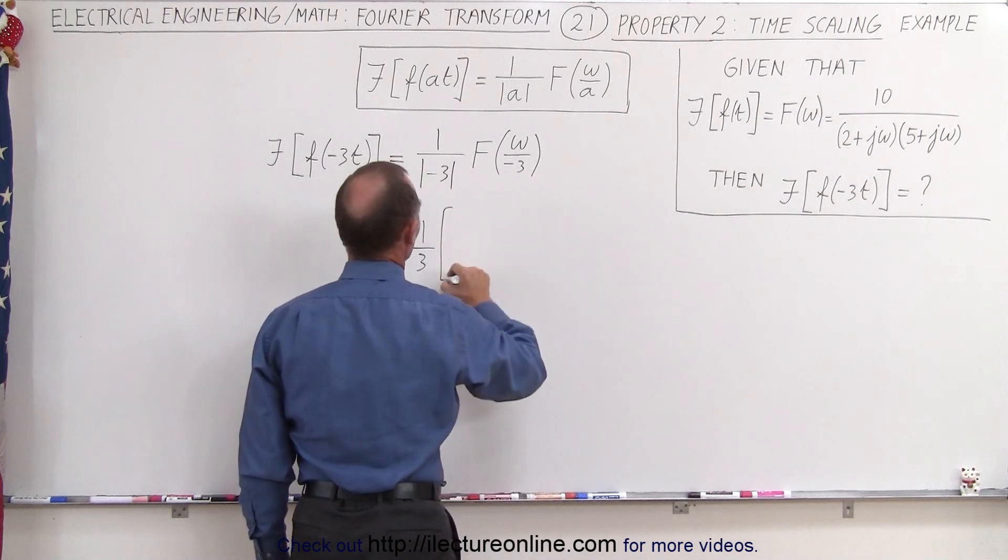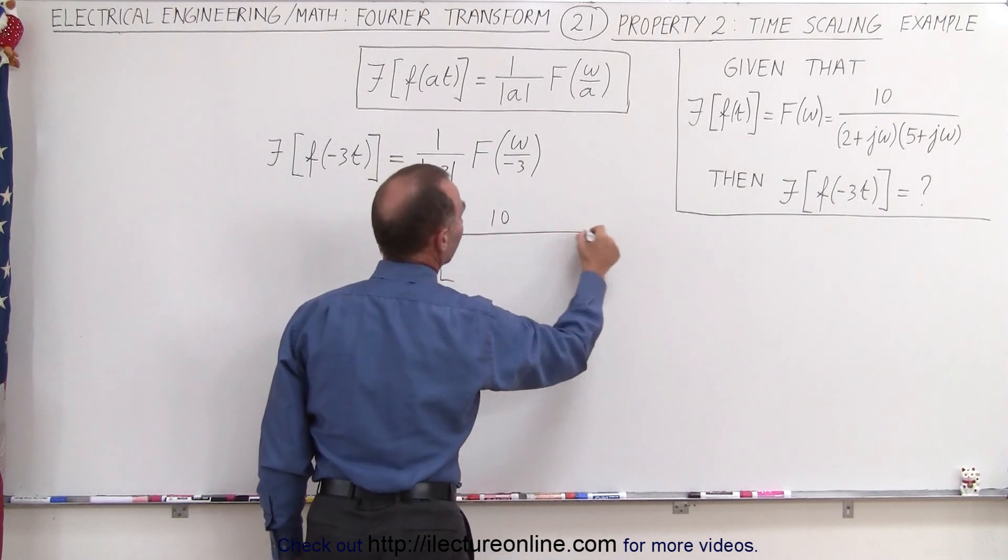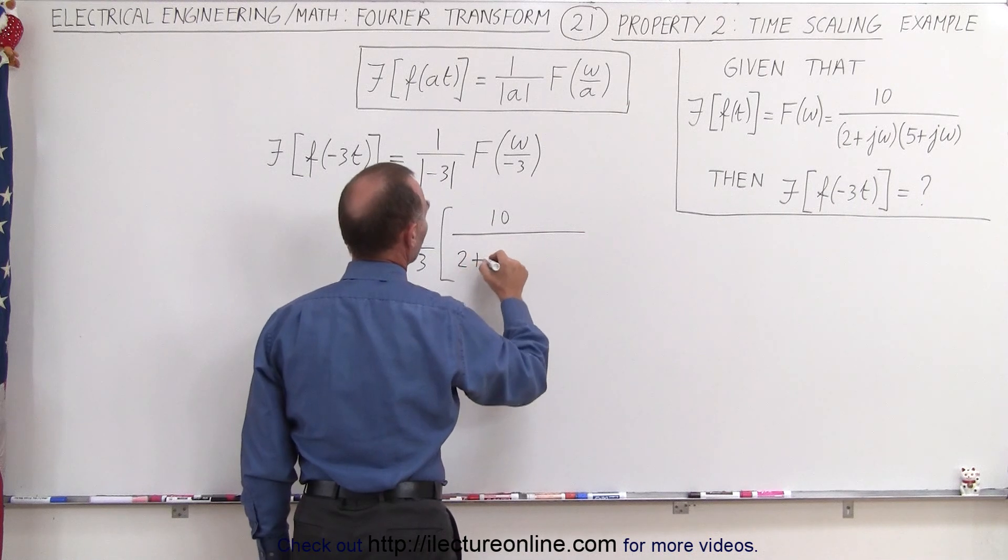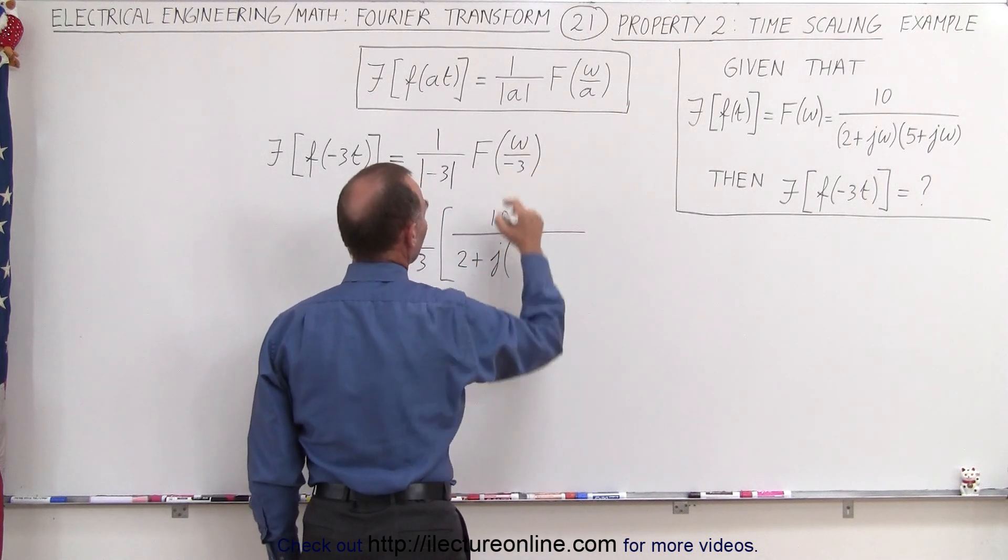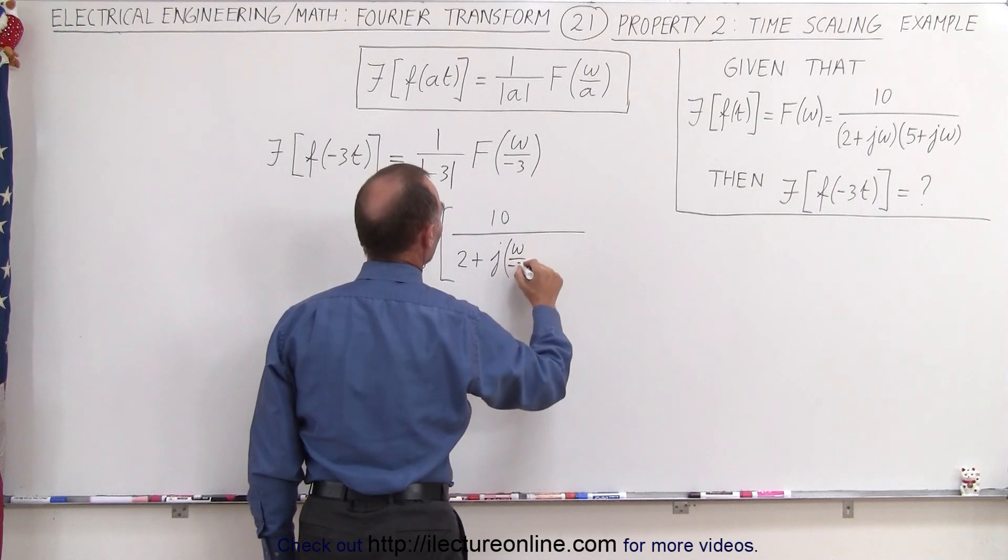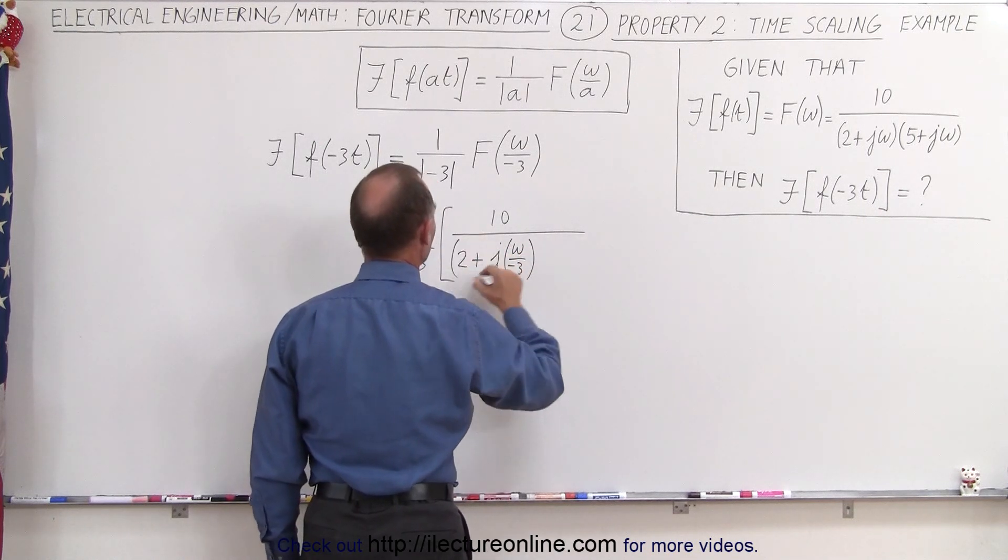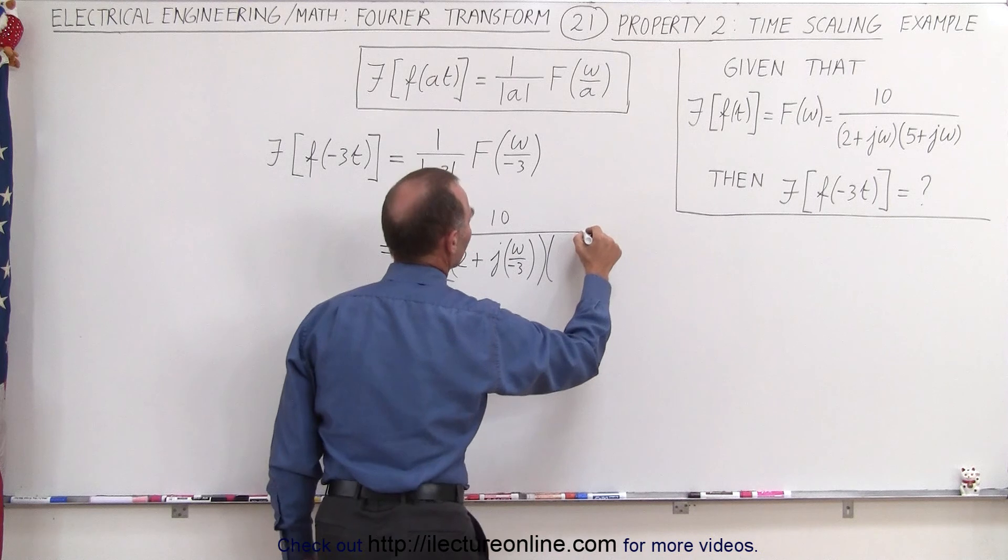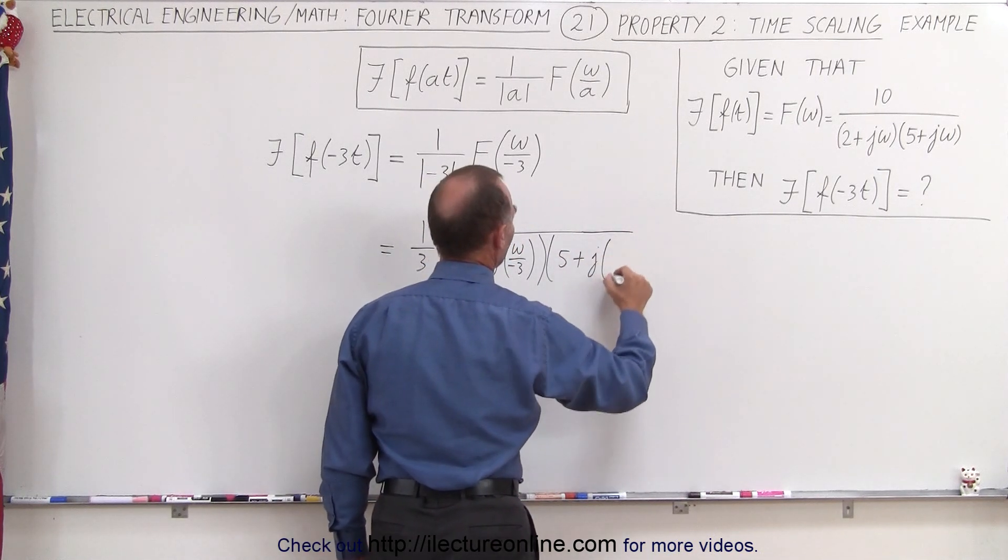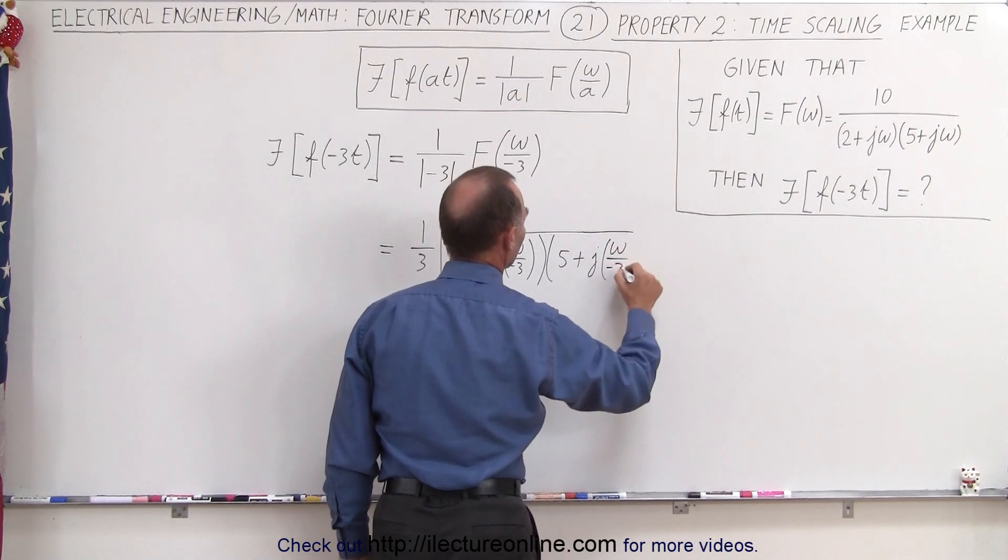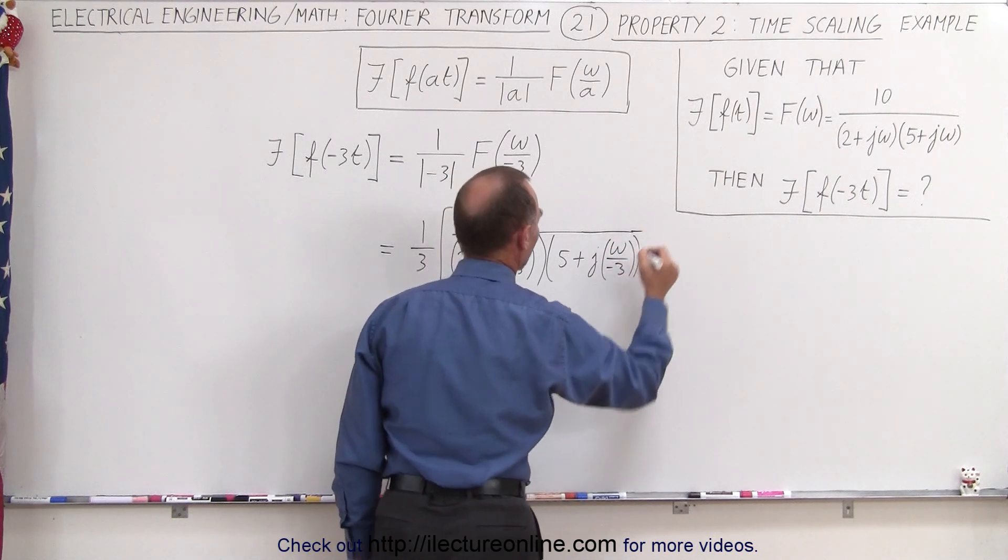That's times 10 divided by 2 plus j and then here instead of omega we're going to write omega divided by minus 3 and that's then multiplied times 5 plus j times omega over minus 3 like so.